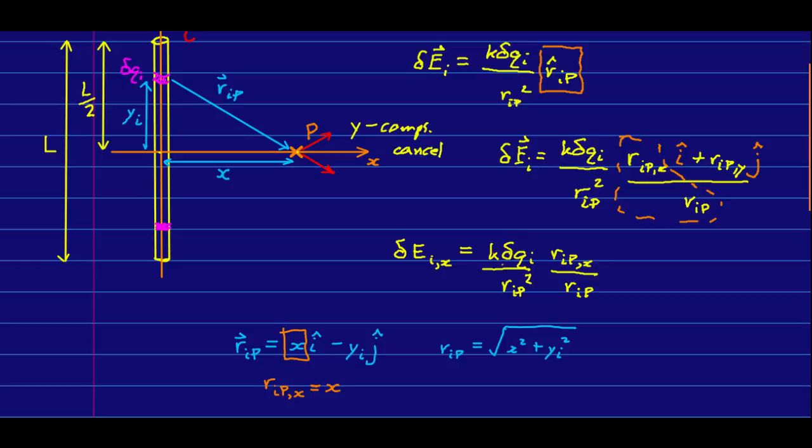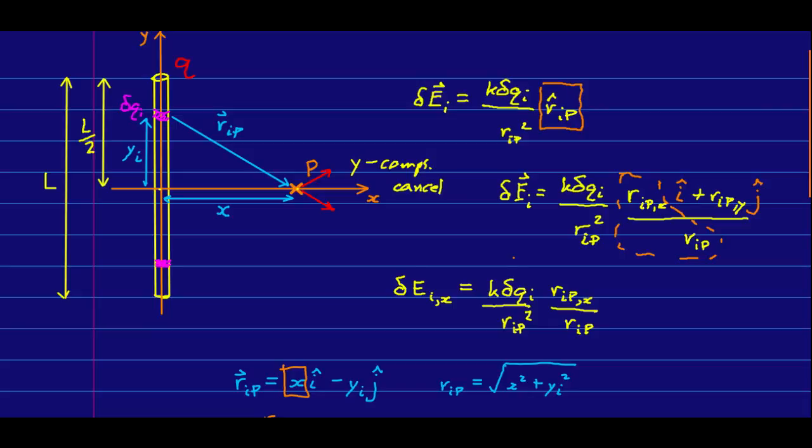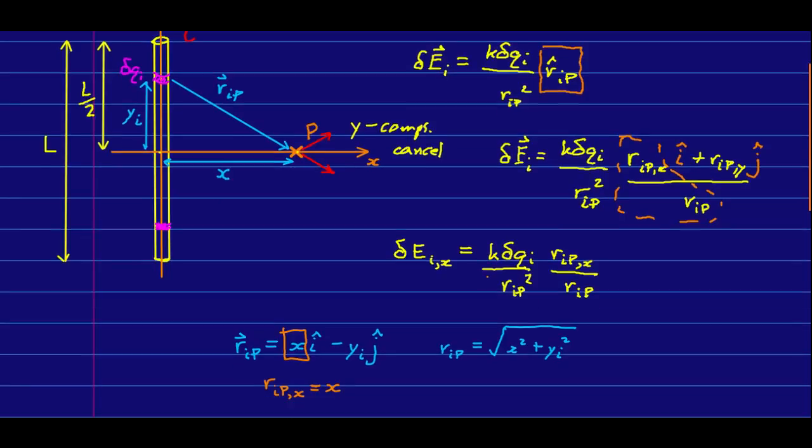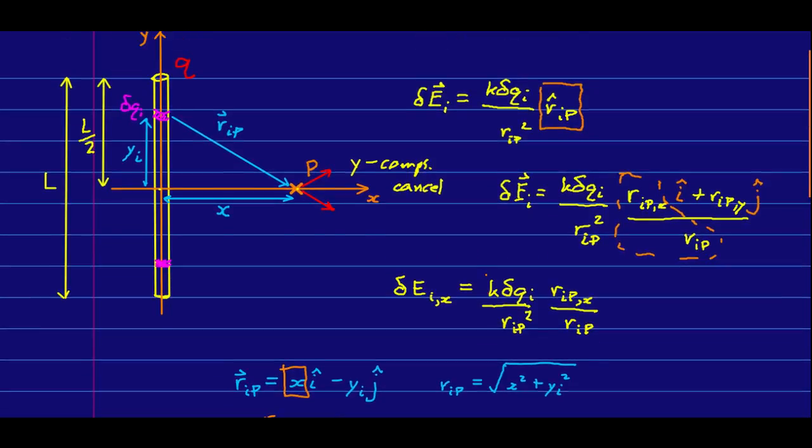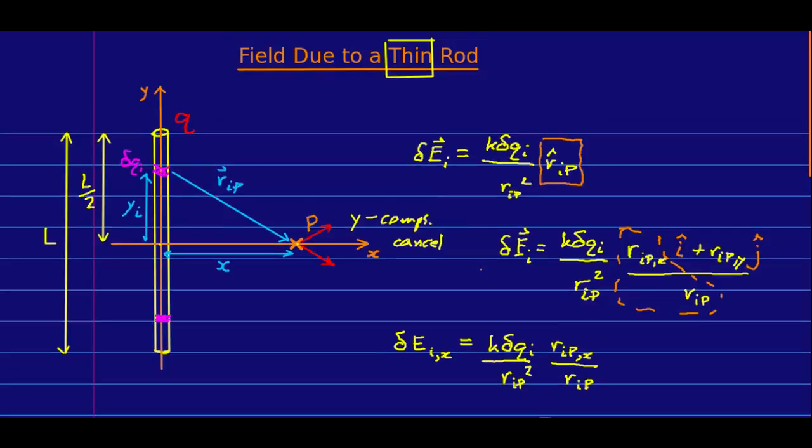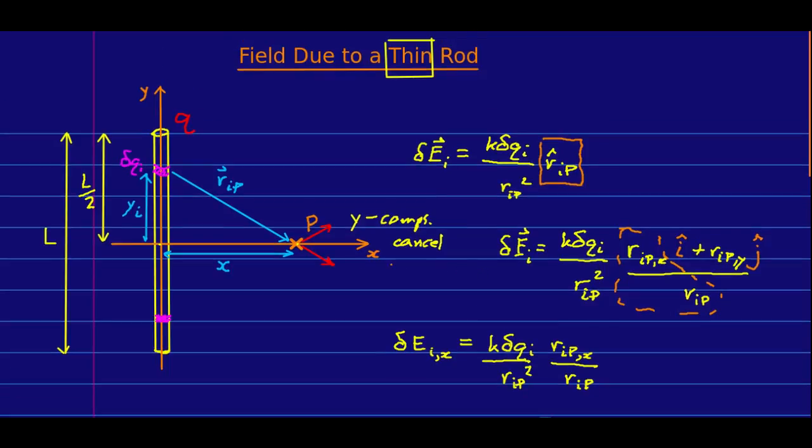And so the only thing left in this expression we need to deal with is this delta q_i. Now note, looking ahead, we're going to have to integrate with respect to something. And what we will be doing is integrating over the rod.